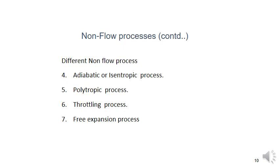Non-flow processes are mainly related to a closed system where energy transfer takes place across the boundary but no mass transfer is permitted. The mass of the system remains constant throughout the process. In this chapter, we analyze all seven different types of non-flow processes. The isothermal process is also called the hyperbolic process because the graph shape is hyperbolic.